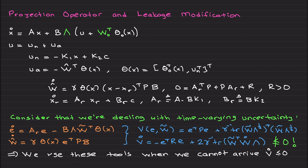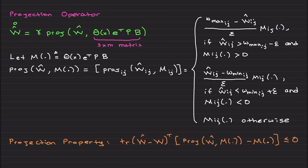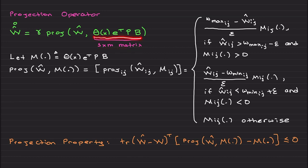For the projection operator, the definition generalizes nicely to the high-order case. Don't be scared — previously when we used the projection operator, the relevant portion was e multiplied by x, which was one-by-one, and we defined the projection operator easily. In this case we have an s×m matrix, so rather than writing theta e-transpose P B everywhere, I define a matrix M that depends on those quantities.